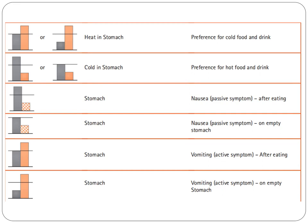Next tower diagram: normal yin, excess yang — the stomach has vomiting as an active symptom after eating. And the last tower diagram: deficient yin, excess yang — the stomach has vomiting as an active symptom on an empty stomach.